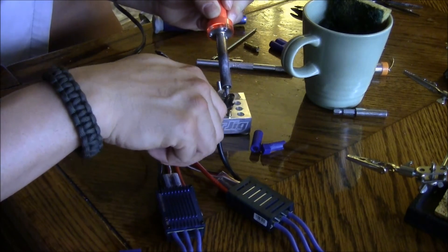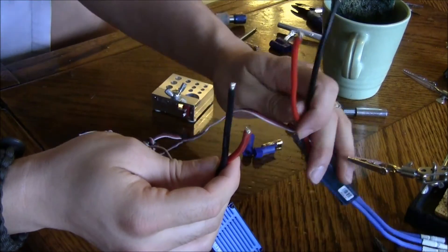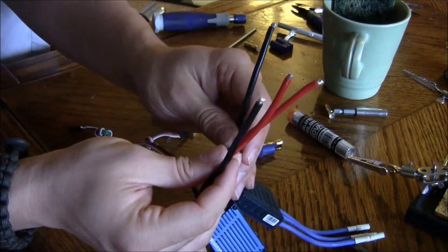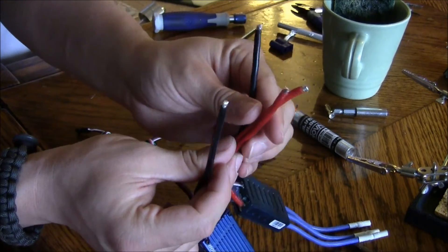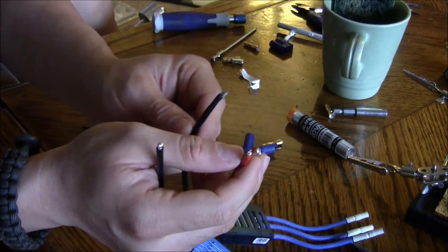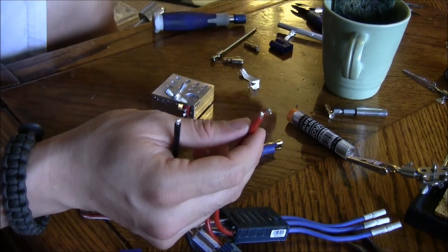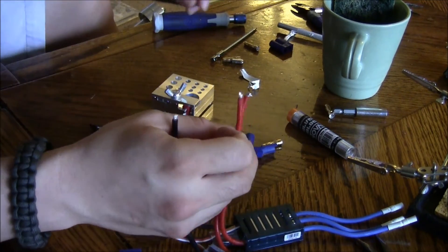As you can see here, I got both ESC connectors off their previous connectors. What I'm going to do now is join the two reds and the two blacks, and then reconnect them to an EC5 connector.